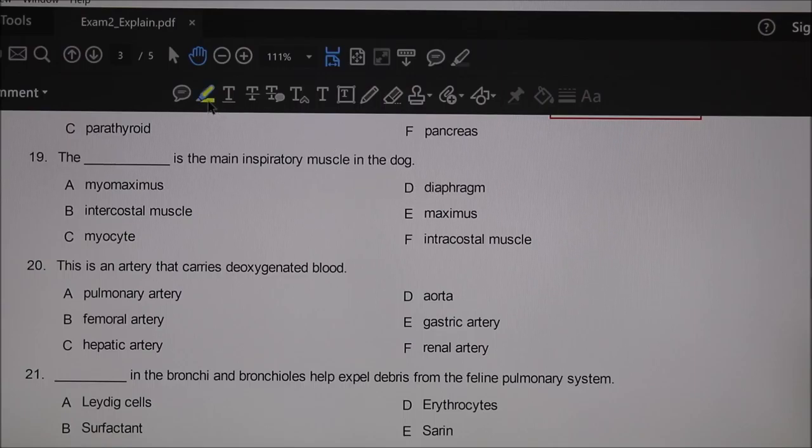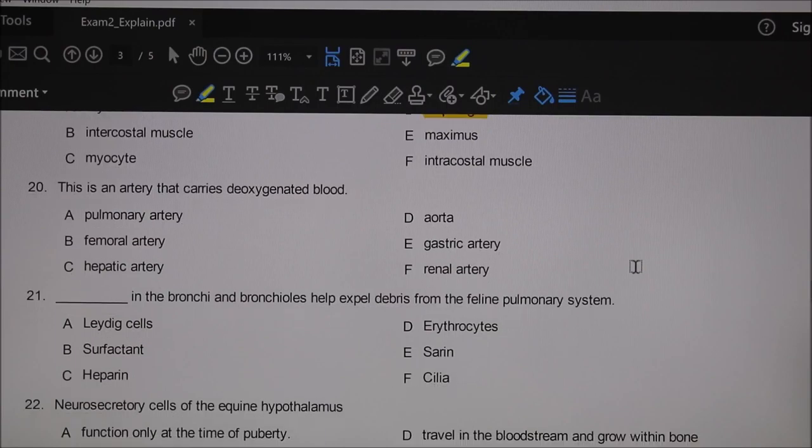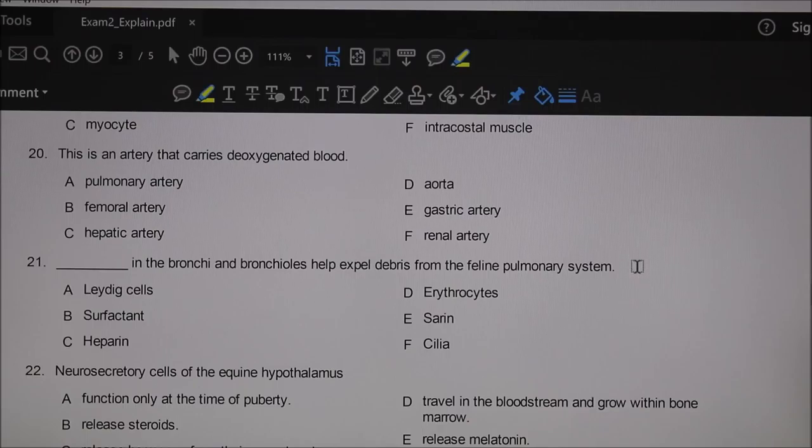Nineteen: the blank is the main inspiratory muscle in the dog. Hopefully you got that—the diaphragm. The right answer is diaphragm only. In your notes, if you didn't get that right, you could write down: the diaphragm is the main inspiratory muscle in the dog.